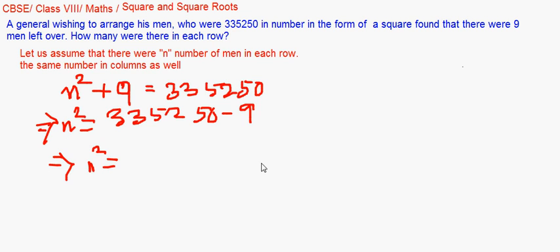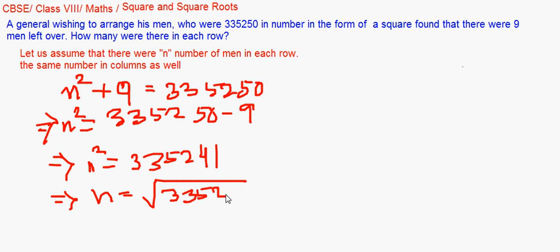So n squared is, if I subtract 9 from it, I'm getting 335241. We have to now find the square root of n, so n is the square root of 335241.